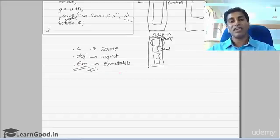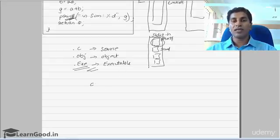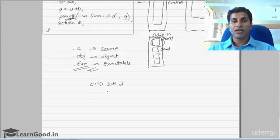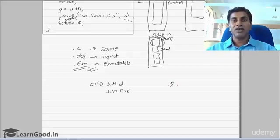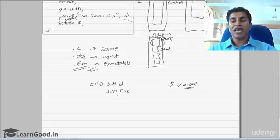You do not need the compiler or linker again to run the program. For example, on DOS you can type SUM or SUM.exe at the DOS prompt and press Enter, and the program will execute directly. On Linux or Unix-based machines, you can run it by typing ./a.out. This is why we call it the executable code.